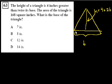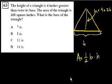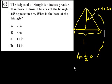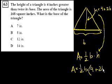What's the area of a triangle? It's the base times the height times 1/2. So area equals 1/2 base times height. They told us the height is 4 more than twice the base, so we substitute that in. The area equals 1/2 the base times the height, which is 4 + 2b.